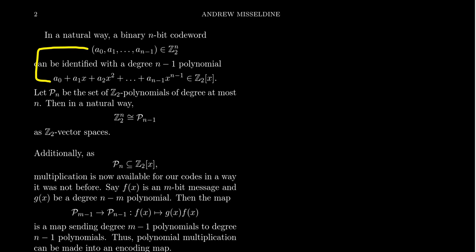This identification will preserve the addition structure. That is, the way we add vectors is exactly how we add polynomials with respect to this identification. When we add like terms of polynomials, that's just what it means to add component-wise with vectors. And then scalar multiplication also means the same thing.